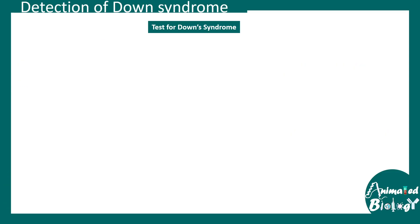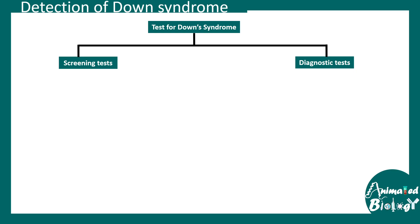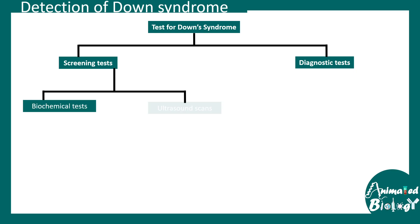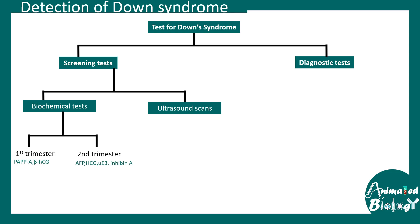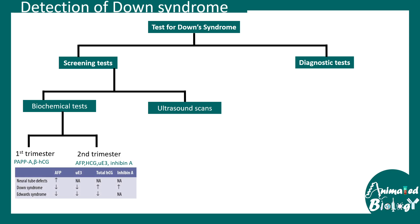There are pre- and postnatal screenings available for Down syndrome. Among prenatal screenings there are biochemical tests and ultrasound-based scans. Biochemical tests in the first and second trimester look for specific biomarkers — altered levels are indicative of Down syndrome or other defects. For example, three common disorders — neural tube defects, Down syndrome, and Edwards syndrome — all show altered levels of alpha-fetoprotein, uE3, and HCG.